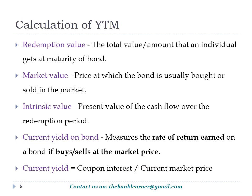Current yield: if a bond is purchased at its current market price and the coupon interest is also received, it helps to calculate the rate of return earned on that bond. Current yield is calculated as coupon interest divided by current market price.